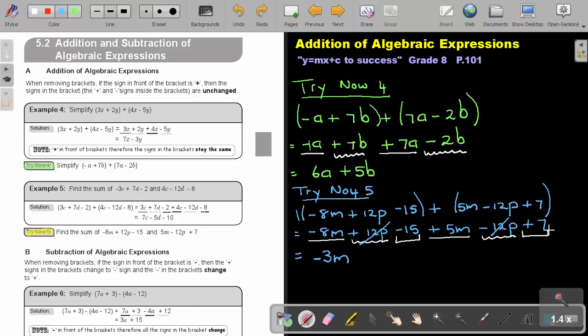And then the next one, negative 15 plus 7. Again, different signs, so I subtract. What is the biggest movement? Negative, so I keep the negative. My answer will have two terms.